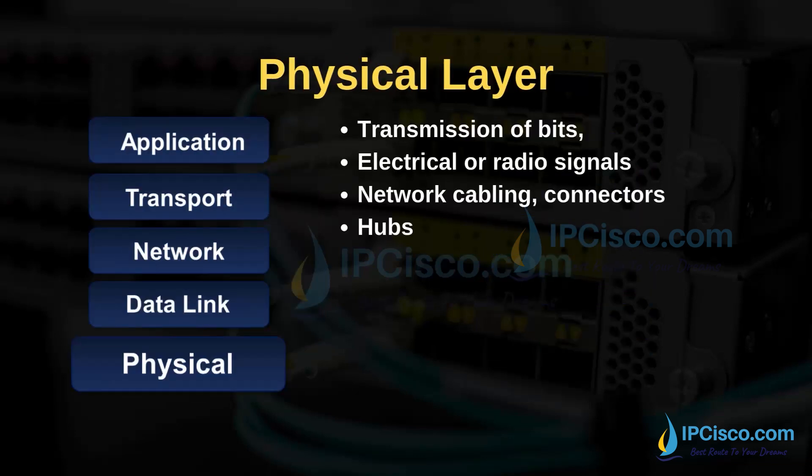The physical layer is responsible for bits transmission. Network cabling, connectors, and radio signals are used in this layer. Bits are transferred over different media using electrical signals and radio signals. This is similar to layer one of the OSI model. Old hubs are the devices used in this layer of the TCP/IP model.